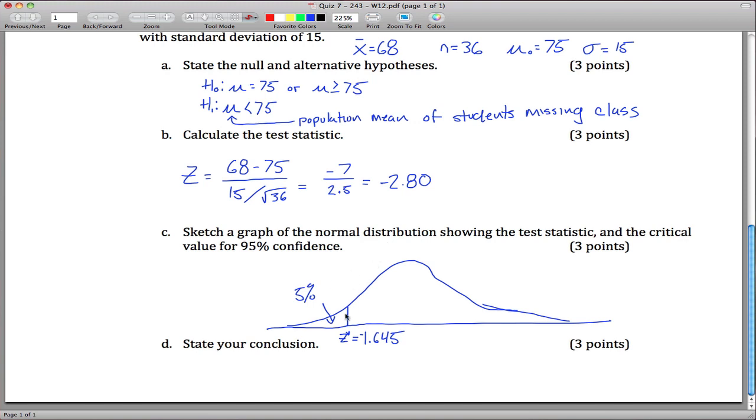Once you have that, what that does is it creates this rejection region right here. Anything less than negative 1.645 for our test statistic, and we're going to reject our null hypothesis. So our test statistic we calculated is negative 2.80, so that's maybe somewhere out here. Z equals negative 2.80 right here.